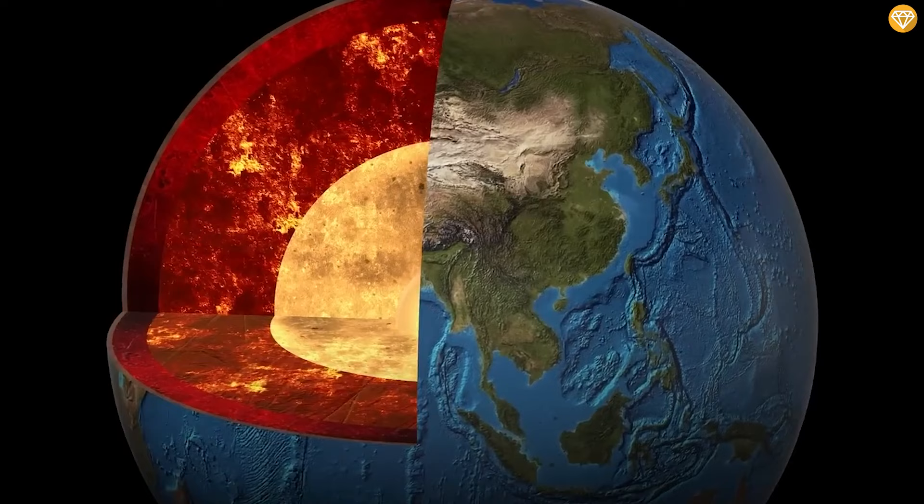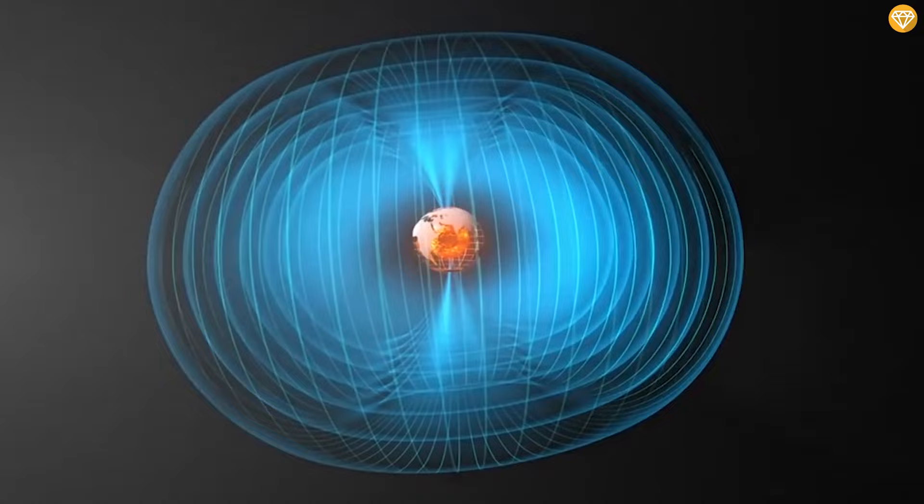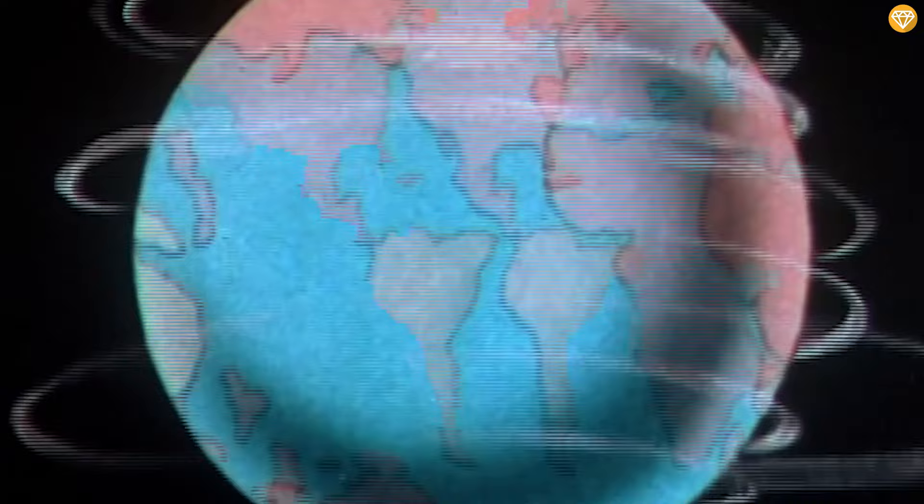Without the moon, the core would solidify, causing the geodynamo and the protective magnetosphere to disappear. The absence of a magnetosphere would expose Earth to solar wind, leading to the complete destruction of our atmosphere and the evaporation of water reservoirs.